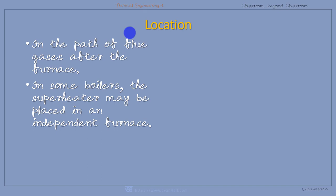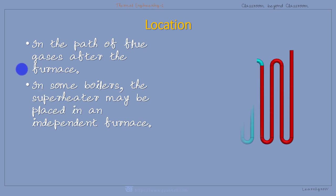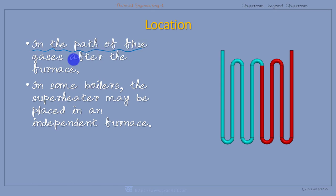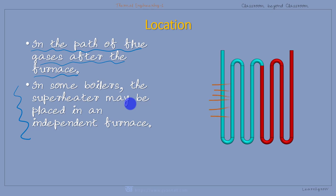Now the question is: where should the superheater be located or placed within the boiler? The answer is it should be in the path of the flue gases after the furnace. If it is vertical, then it is above the furnace. In some special cases, the superheater may be placed in a separate or independent furnace. But normally, in the same furnace, the water tubes and superheater tubes are placed in a suitable location, exposed to the hot gases passing from the combustion chamber towards the chimney.